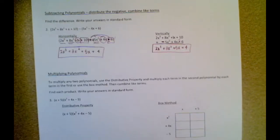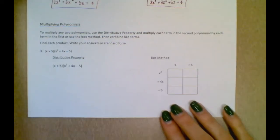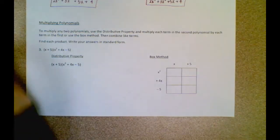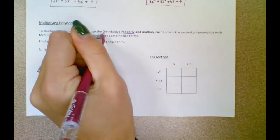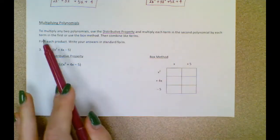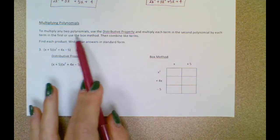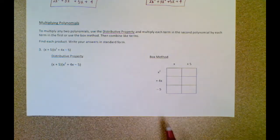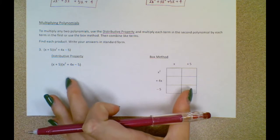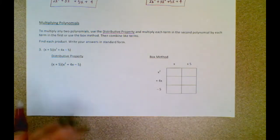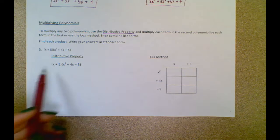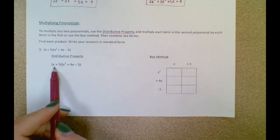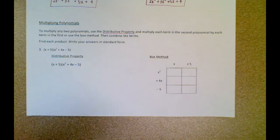Now we're going to get down to multiplying. To multiply any two polynomials, you're going to use the distributive property and multiply each term in the second polynomial by each term in the first. Or you can use the box method. Then you're going to combine your like terms. This kind of looks like foiling, but the reason we don't call it FOIL is because we don't have two binomials — a binomial is when you have two terms. Notice you have three terms here, but it's the same idea.